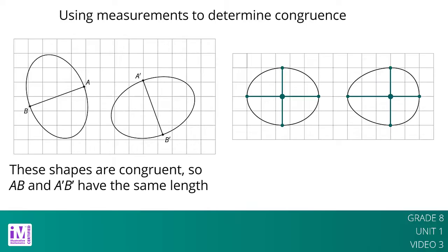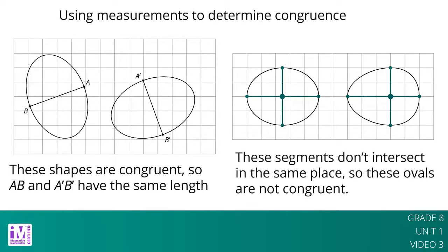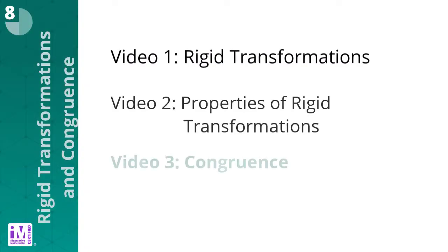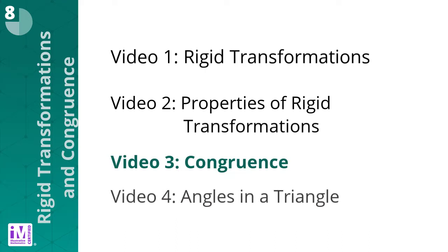This shows the ovals are not congruent. Thank you for watching video 3 of 4 for this unit on rigid transformations and congruence.